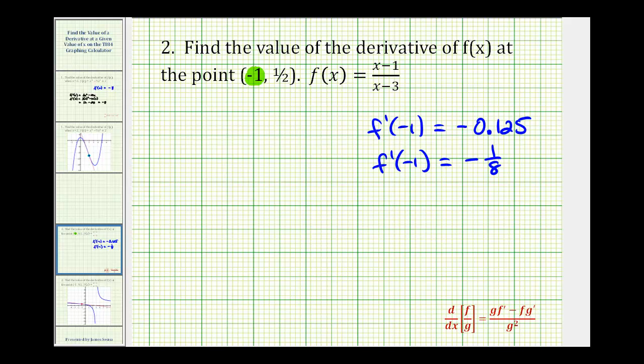If we did want to verify this one by hand, we'd have to use the quotient rule given here below. Let's go ahead and just take a moment and do that. Notice our denominator is the denominator squared. The numerator is going to be the denominator, (x - 3), times the derivative of the numerator, which is just 1, minus the numerator times the derivative of the denominator, which is just 1.